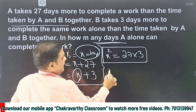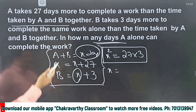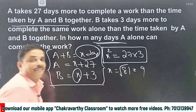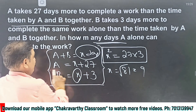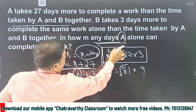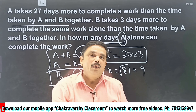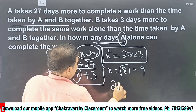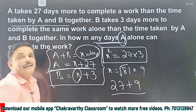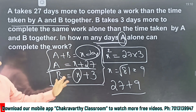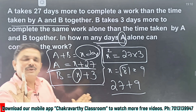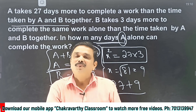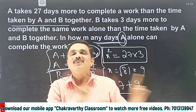Finding out X is very simple. X equals the square root of 27 into 3, which is the square root of 81, that is 9. Now X value is 9. The question asks for A alone — so A alone can complete the work in 27 plus 9 days, that is 36 days. If it were B's case, that is X plus 3, giving 9 plus 3 equals 12 days. This is the shortcut. How much time would you take? Not more than 30 seconds, provided you know the shortcut.